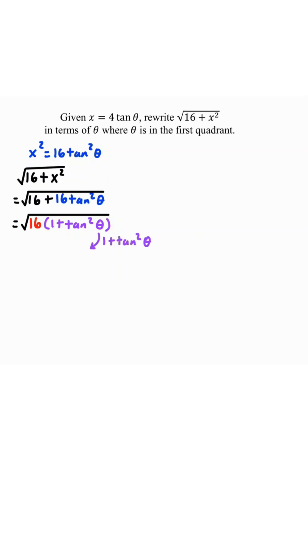I usually put that in my identity. 1 plus tangent squared theta is really just secant squared theta. So we'll substitute that in. Square root of 16 is 4. Square root of secant squared theta is absolute value of secant theta.